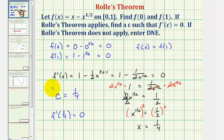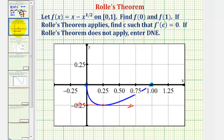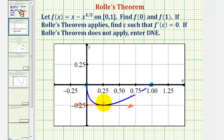Going back to our graph one more time, our graph does verify that our work is correct. Here's where x equals 0.25, or one-fourth, and the derivative function would equal zero at this x value, because we can see we have a horizontal tangent line at that point on the function. I hope you found this helpful.